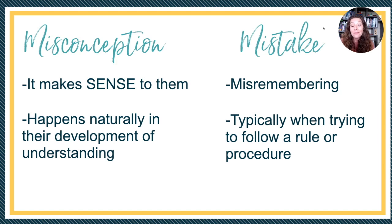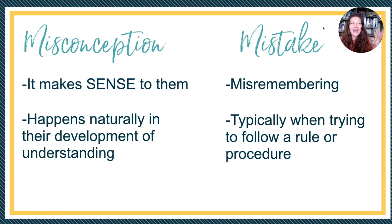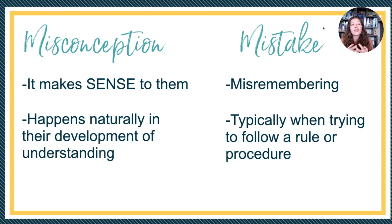Like sometimes when I see four times three, I think seven just because I see four and three, and I think that makes a seven because I added instead of multiplying. That's a mistake. That is not something based in my understanding of mathematics.